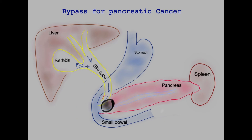Pancreatic cancers can also cause obstruction of the small bowel by growing around the small bowel at the bottom end of the stomach, encircling it and thus causing obstruction. Patients would suffer repeated bouts of vomiting and may lose a lot of weight and fluid rapidly.